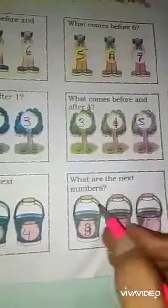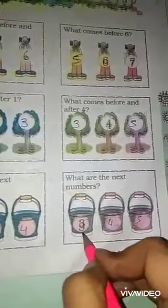What are the next numbers? Here we can see 3. Next number is 4. Then next is 5.